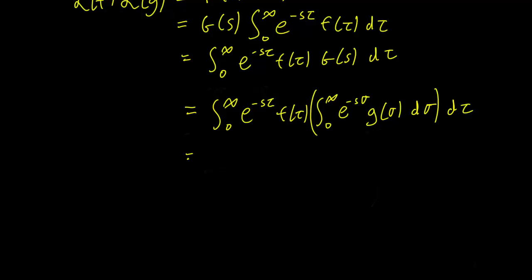The next step is to perform a change of variables. So let's go from σ to little t, so σ equals t minus τ. And for this change of variables, we want to treat t as the variable we're changing to. So dσ equals dt, we're treating τ as a constant here.